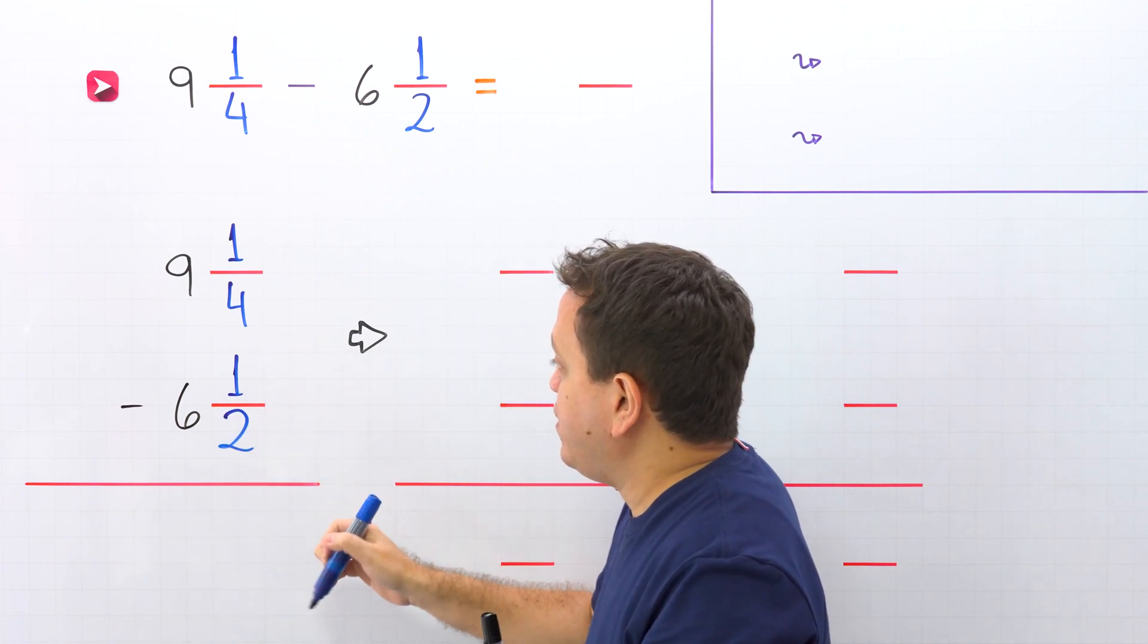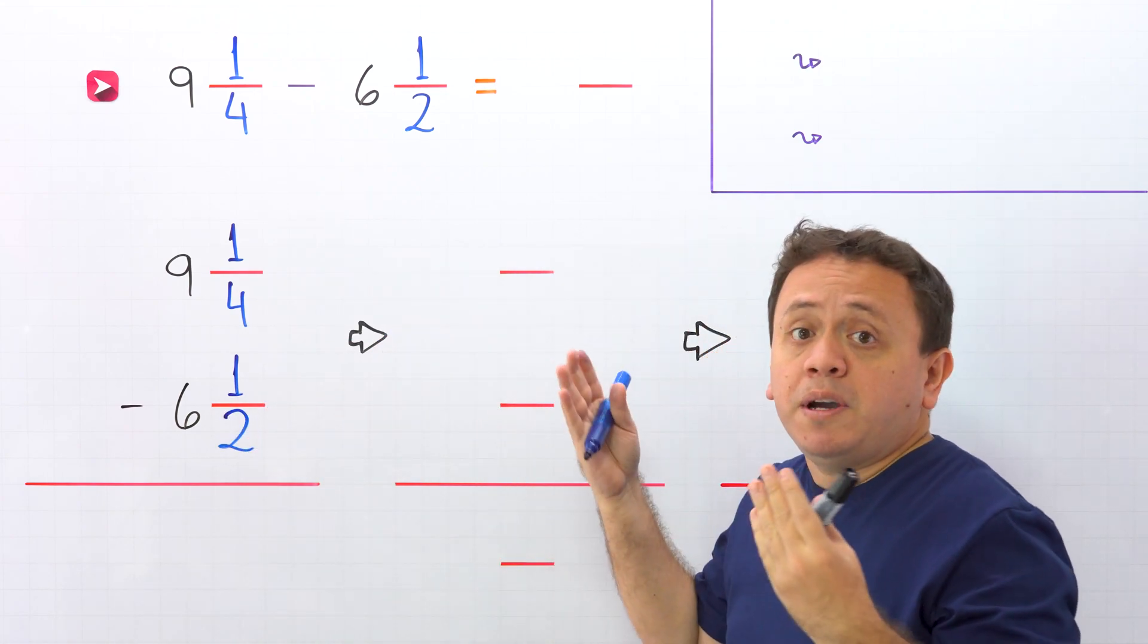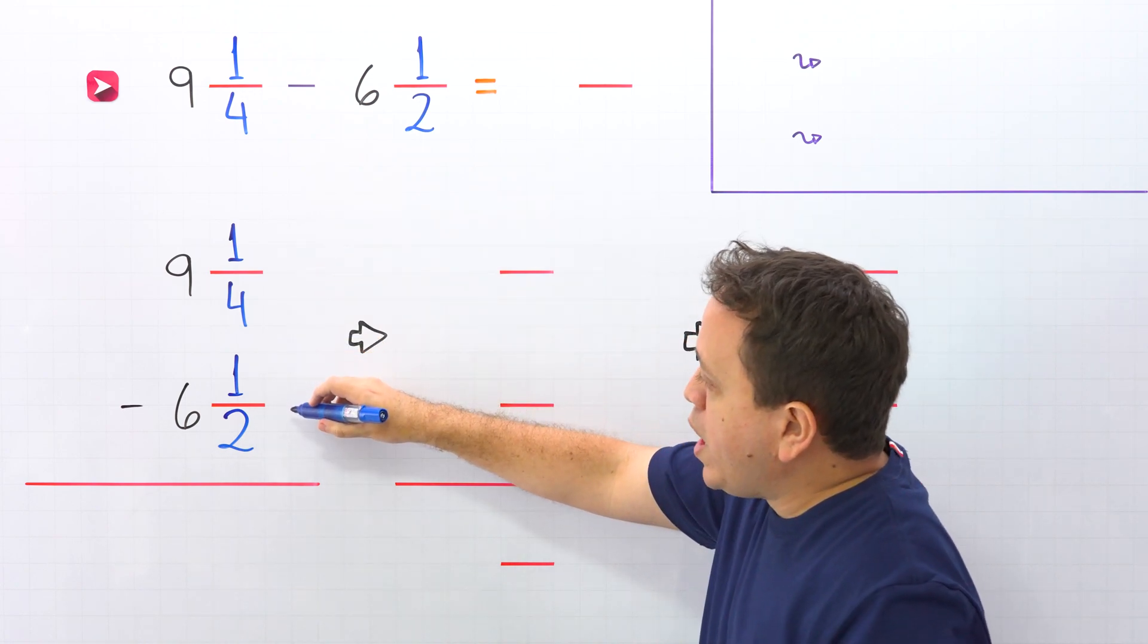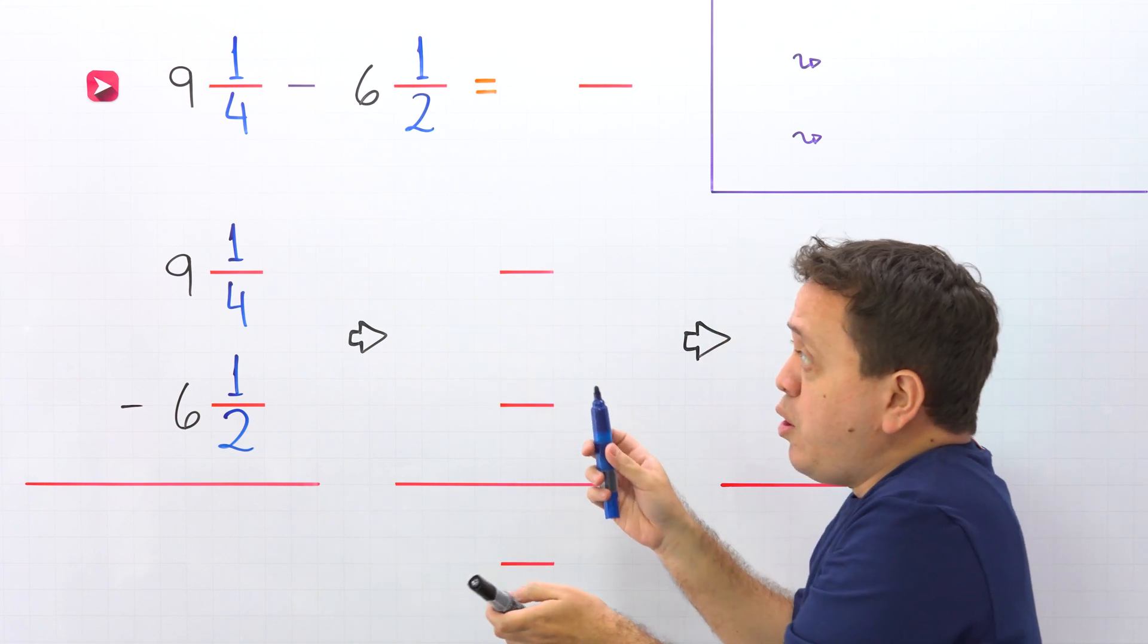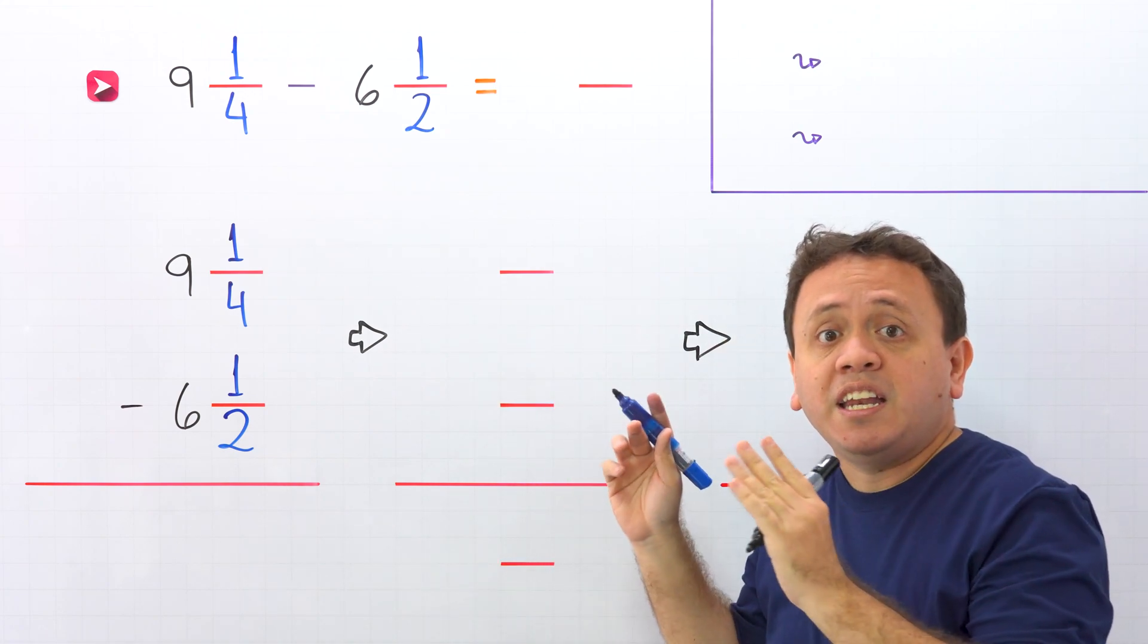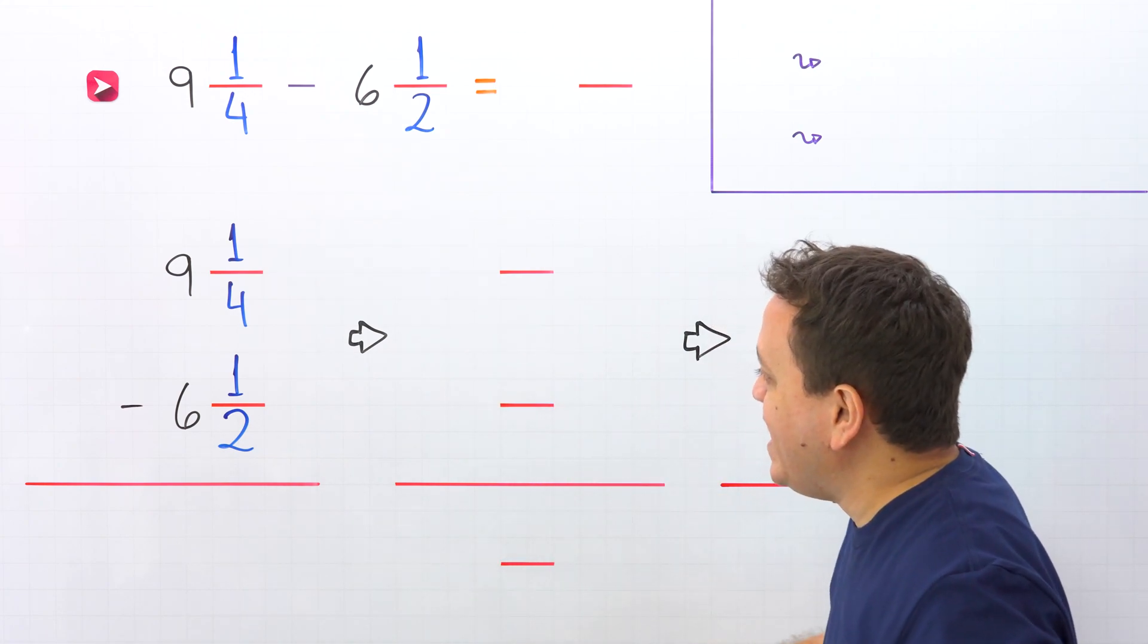To find the difference of these two mixed numbers, we start by subtracting the fractions. 1 fourth minus 1 half. However, these two fractions have different denominators, so we need the least common multiple of the denominators, or the least common denominator.